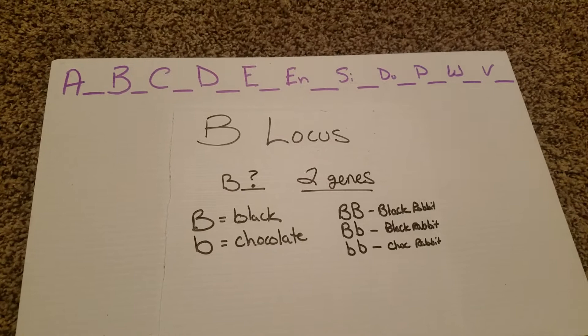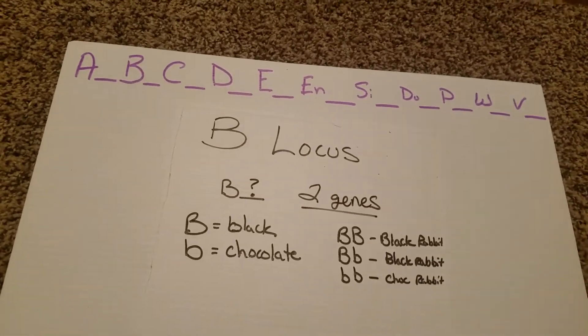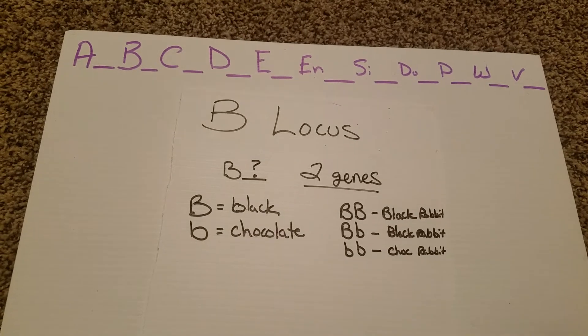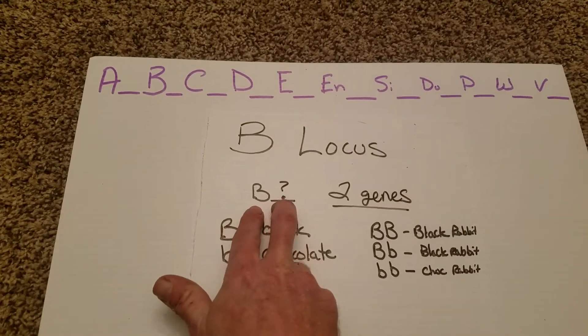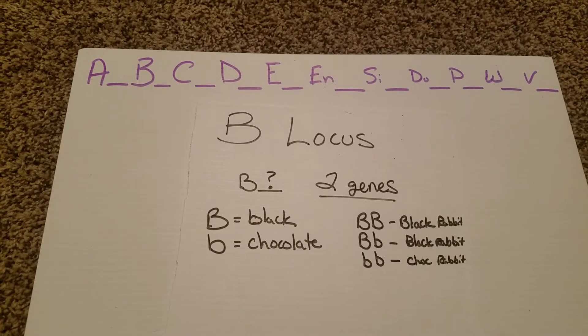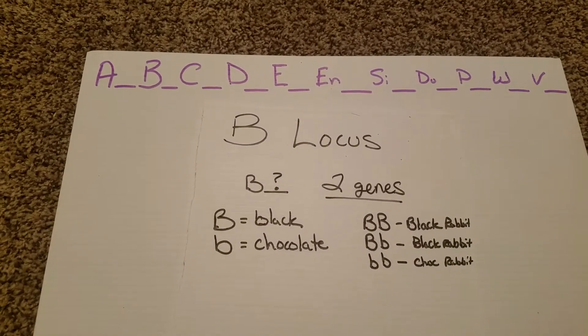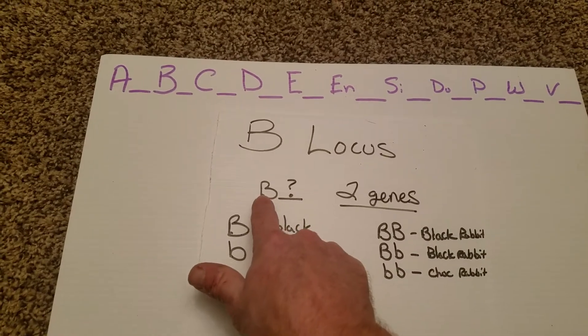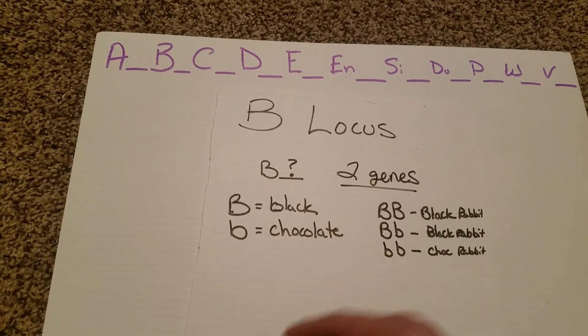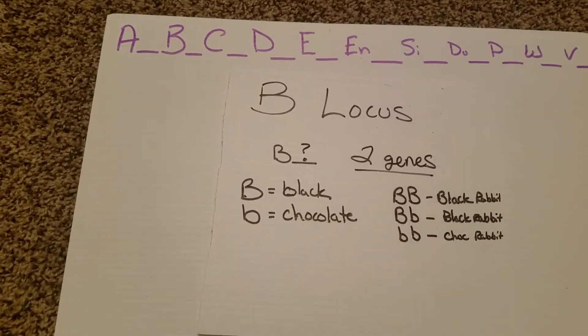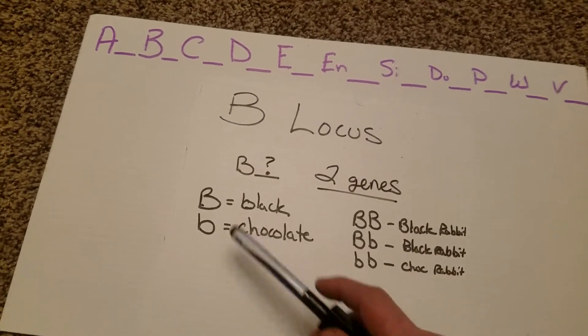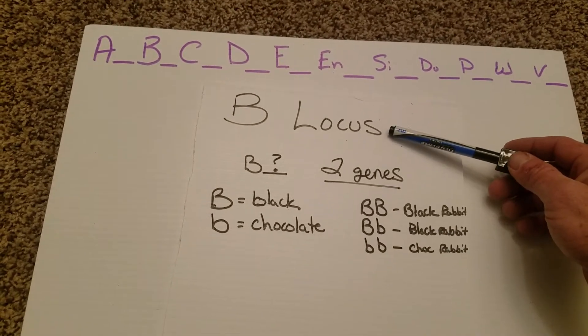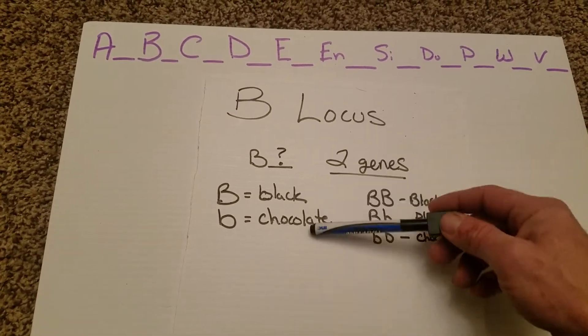It's actually one of the easier locus points to understand. Just as in the A locus, we have two different genes. One is going to represent the color of the rabbit that we visually see. The second one can be the equivalent of what we see, or it could be the more recessive, which is the chocolate. There are only two genes that take place at the B locus, so you can only have black and chocolate.